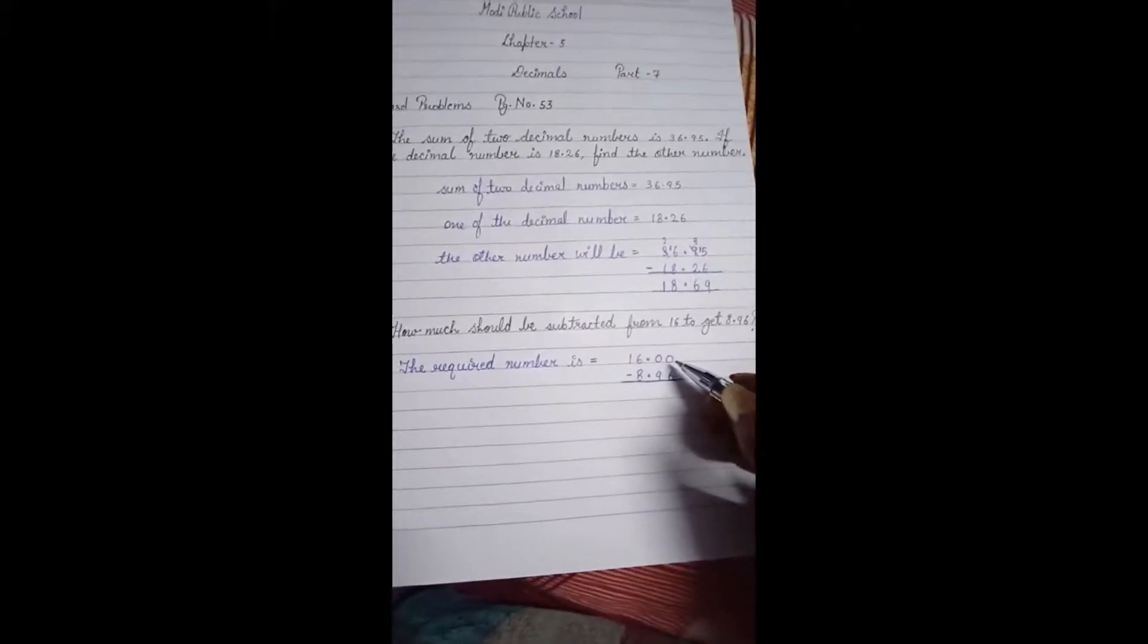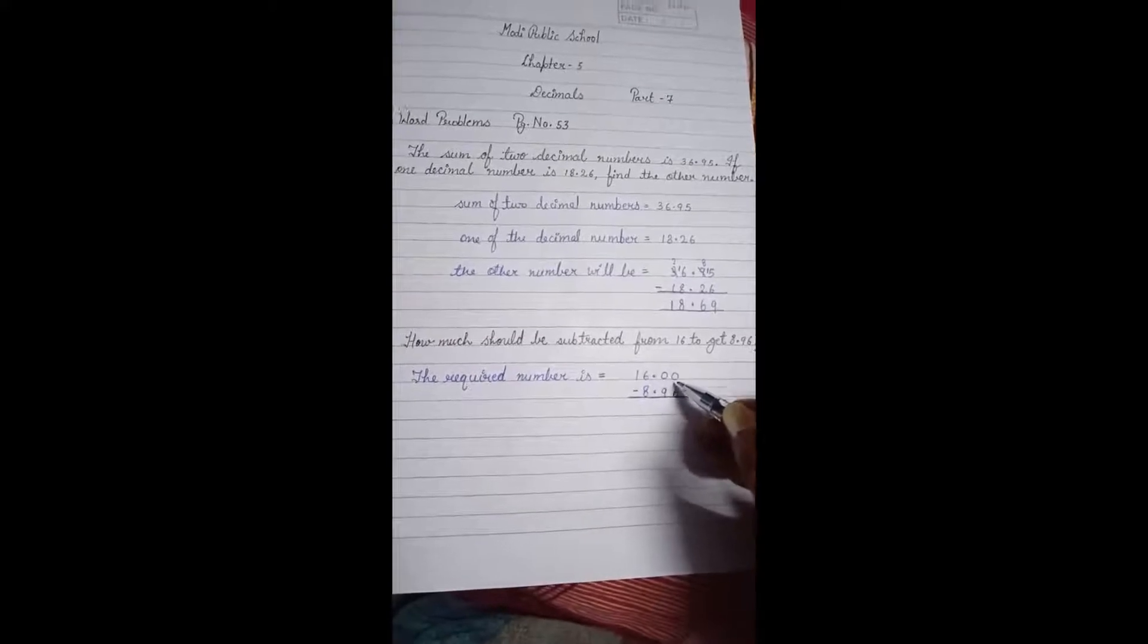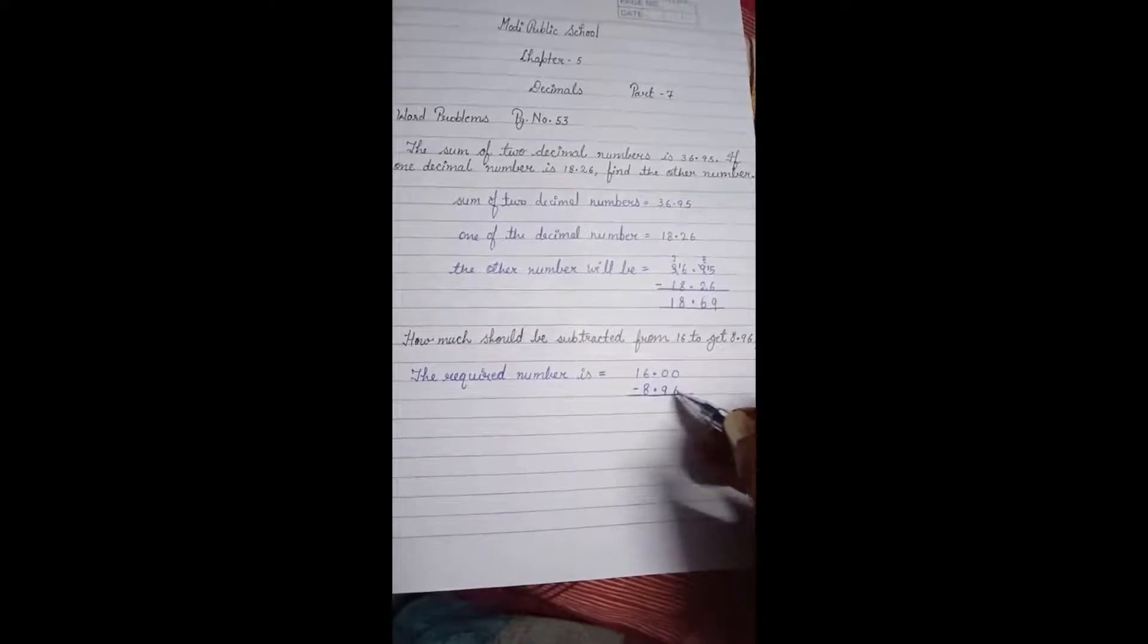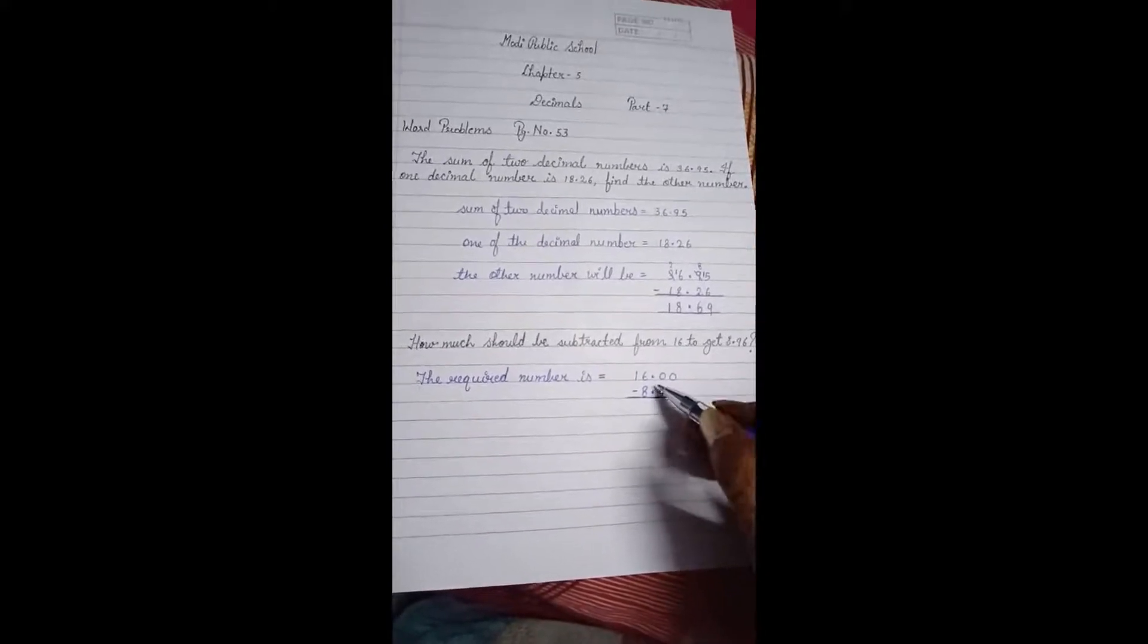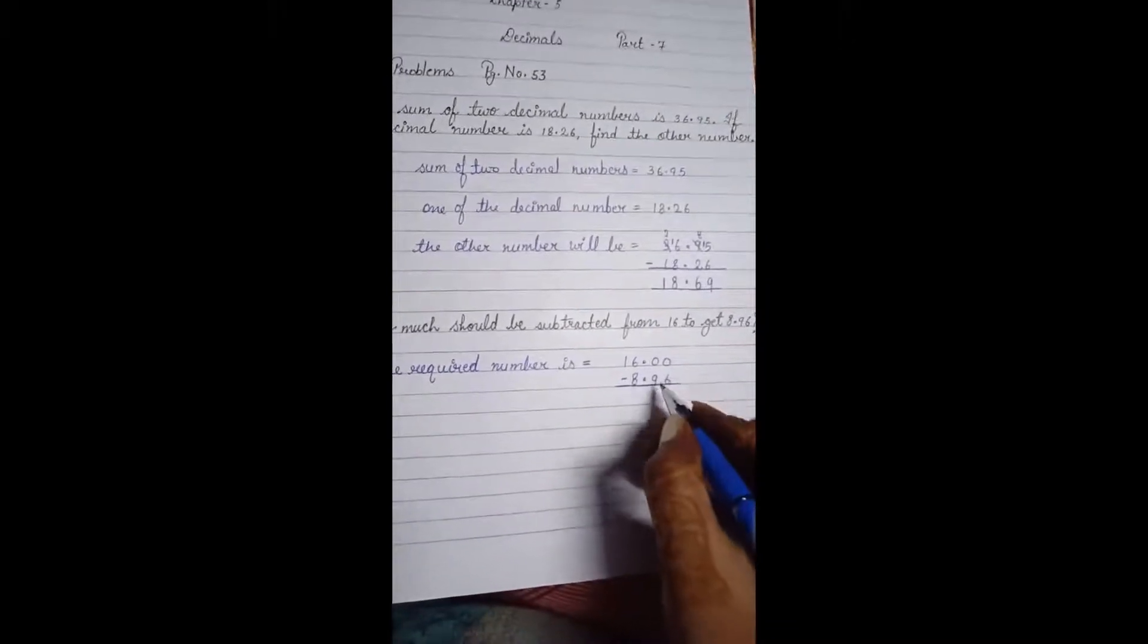The required number will be 16.00 minus 8.96. Why I have written it 16.00? Because here we have got 2 decimal places. So this will be subtracted out of 16. Let us start subtracting.